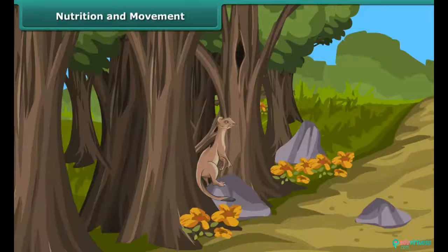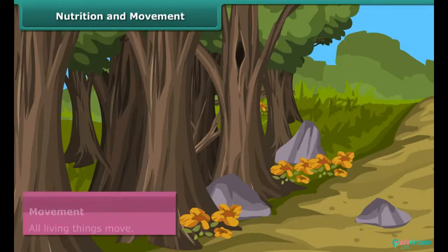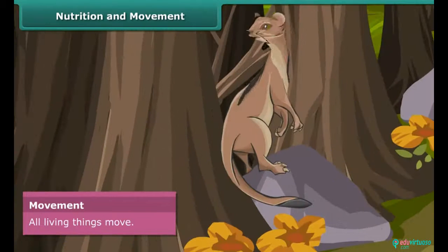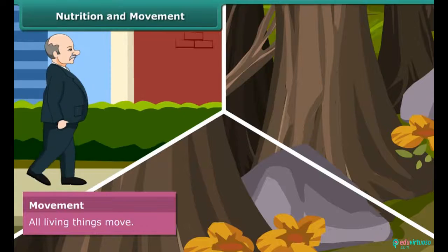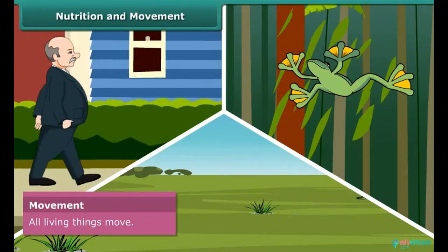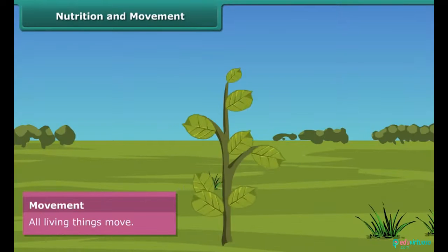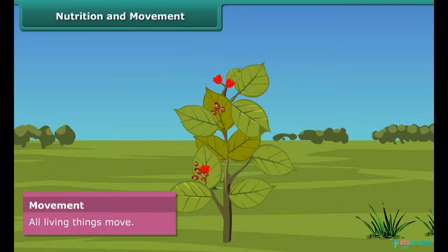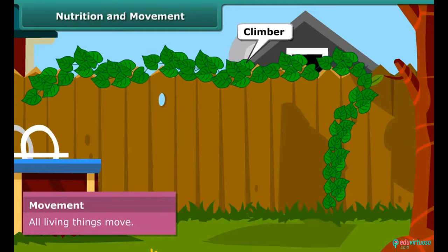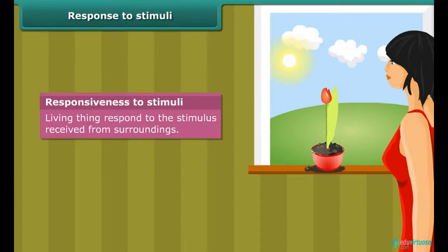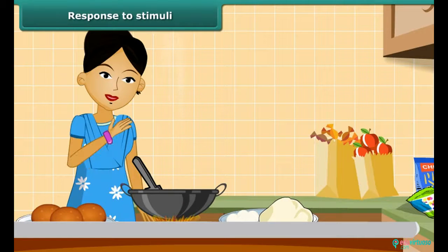Another important characteristic of living organisms is movement. All living things move by their own accord — people walk, rocks roll, snakes crawl. Plants also make some movement but do not change their place; for example, goat-foot climbers move towards a support. When you place a plant near the window, you observe that the plant bends towards the light — this characteristic is called responsiveness to stimuli. Similarly, when we touch a hot utensil, a spontaneous reaction is to pull our hand back; living things respond to stimuli received from their surroundings.